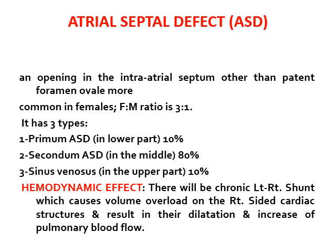The second type of acyanotic congenital heart disease is atrial septal defect (ASD) — an opening in the interatrial septum other than patent foramen ovale. It is more common in females (3:1 ratio). There are three types: primum ASD (located in the lower part of the septum), secundum ASD (in the middle, about 80%, most common), and sinus venosus ASD (in the upper part, about 10%). ASD causes chronic left-to-right shunt, producing volume overload on the right side of the heart, leading to dilatation and increased pulmonary blood flow.